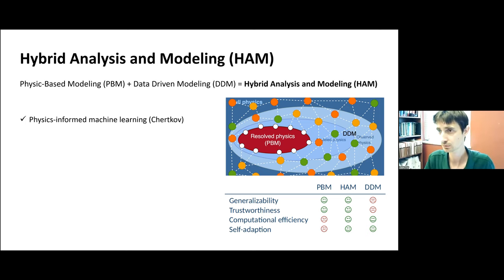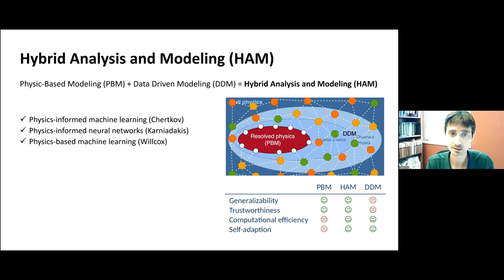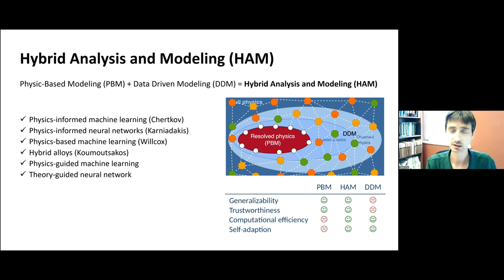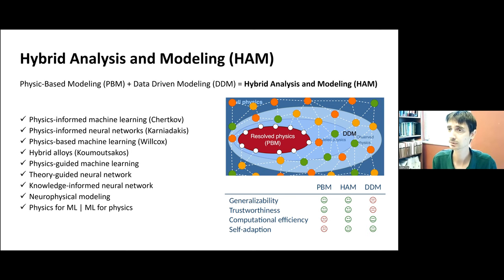Karen Willcox and colleagues call it physics-based machine learning. Professor Karniadakis also uses the term 'hybrid alloys.' In our group we mostly call it physics-guided machine learning. Theory-guided machine learning is a phrase used in the computer science community; knowledge-informed neural networks, neurophysical modeling, physics for ML, ML for physics — many people have gotten excited about this concept. This talk is under the scientific machine learning consortium. I want to differentiate between hybrid modeling and scientific machine learning.